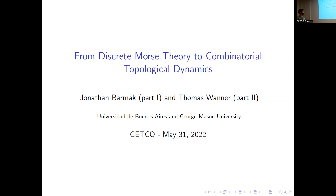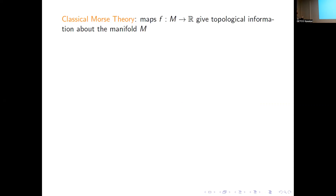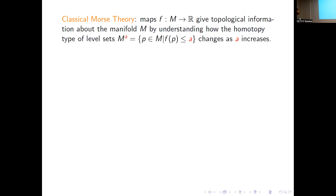Let me begin. I know that a lot of you know much about this subject so let me go fast. The idea is that we want to understand topological features of a compact differential manifold by understanding maps from the manifold to the reals. We want to know how the level sets change as we increase the parameter a, where the level sets at level a are the set of points whose f-value is less than or equal to a.